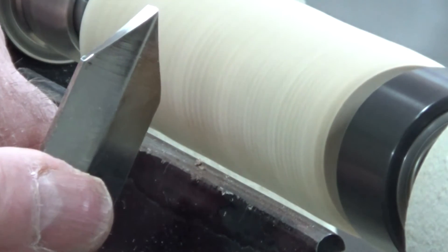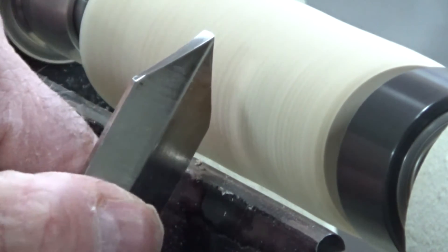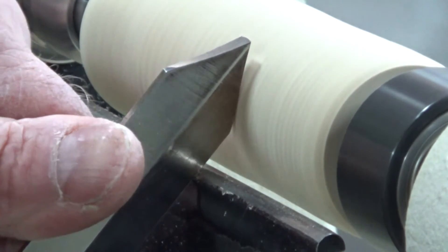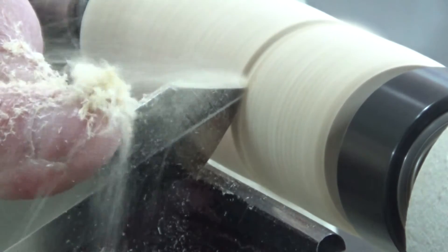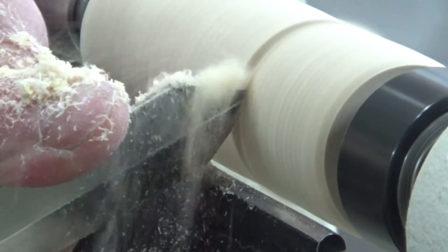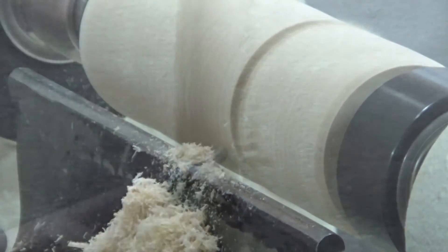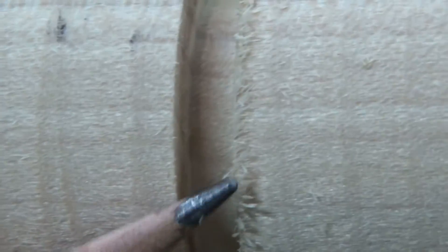Let's take a closer look at this cut. Again, let the tool rest on the tool rest, we ride the bevel, then we lift the handle and make the cut. This is a very aggressive cut, and as you can see, it tears the fibers up along the edge.